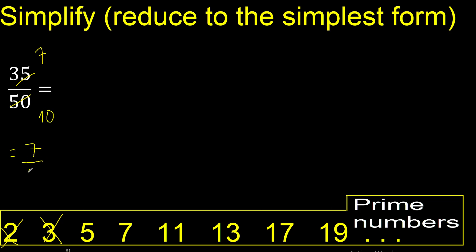We can finish because 35 and 50 can be divided by the same number, which is 5.